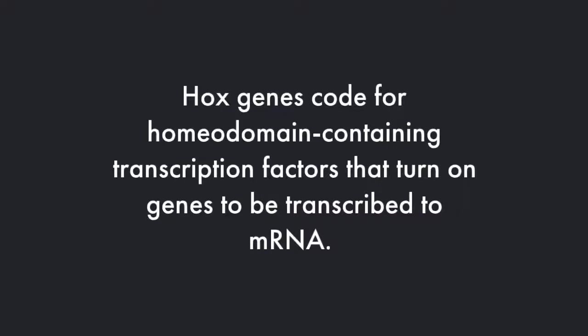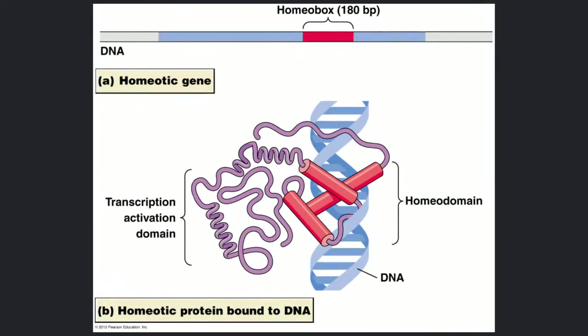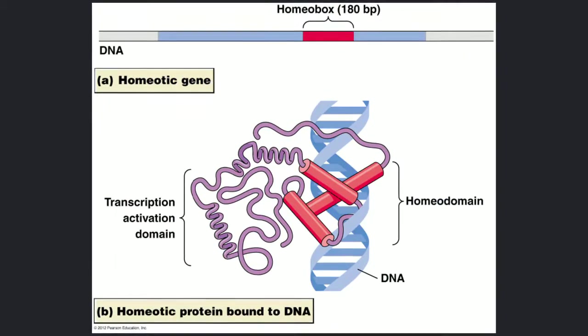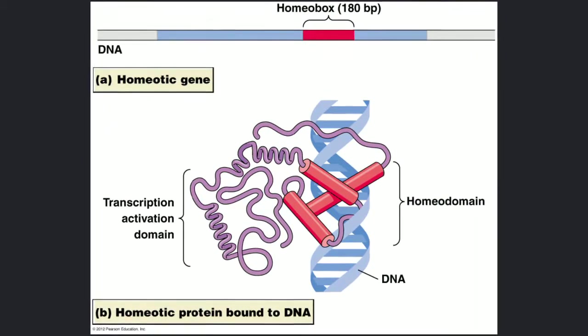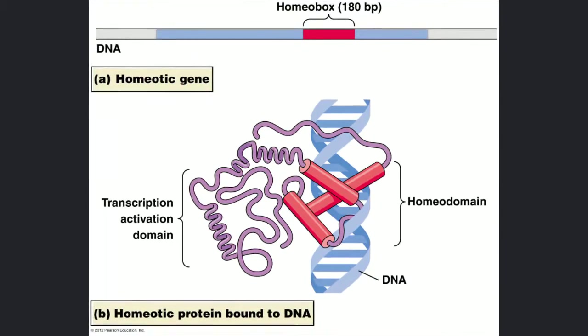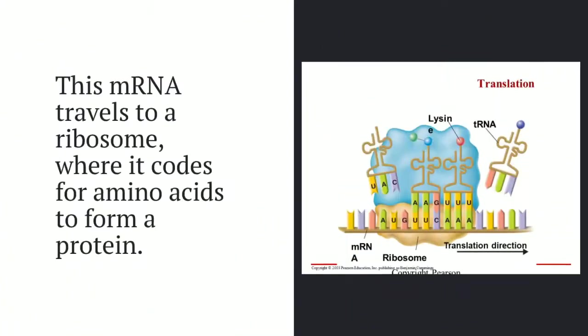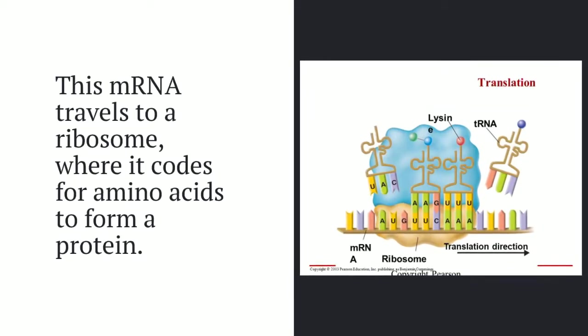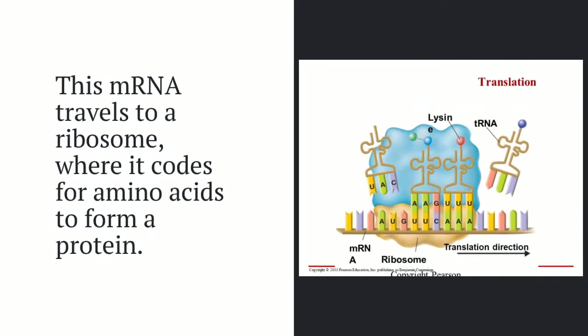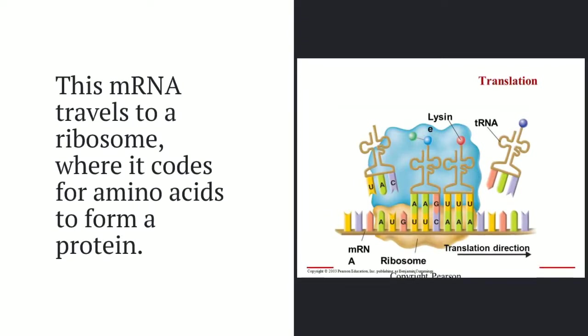Getting into more of the specifics, the transcription factors that Hox genes code for are called homeodomain-containing transcription factors, and these are the ones that turn on certain genes to be transcribed to mRNA. Here's a representation of those homeodomain transcription factors and how they interact with the DNA to turn on certain genes that will be transcribed to mRNA. For translation and the creation of proteins, the mRNA travels out of the nucleus and goes to a ribosome, where it codes for specific amino acids using its nitrogen bases, and these amino acids combine to form a protein.